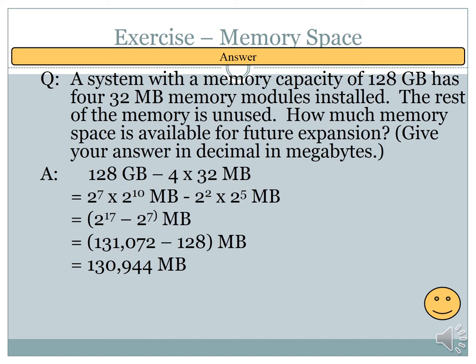A kilo is 2 to the power 10, a mega is 2 to the power 20, and a giga is 2 to the power 30. So 128 gigabytes written in terms of bytes is 128 × 2³⁰ bytes.